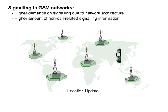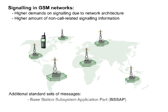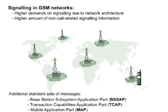To guarantee that the signalling demands in GSM networks are met, additional standard sets of messages are required. The following protocol layers are necessary: the Base Station Subsystem Application Part, BSSAP; the Transaction Capabilities Application Part, TCAP; and the Mobile Application Part, MAP.